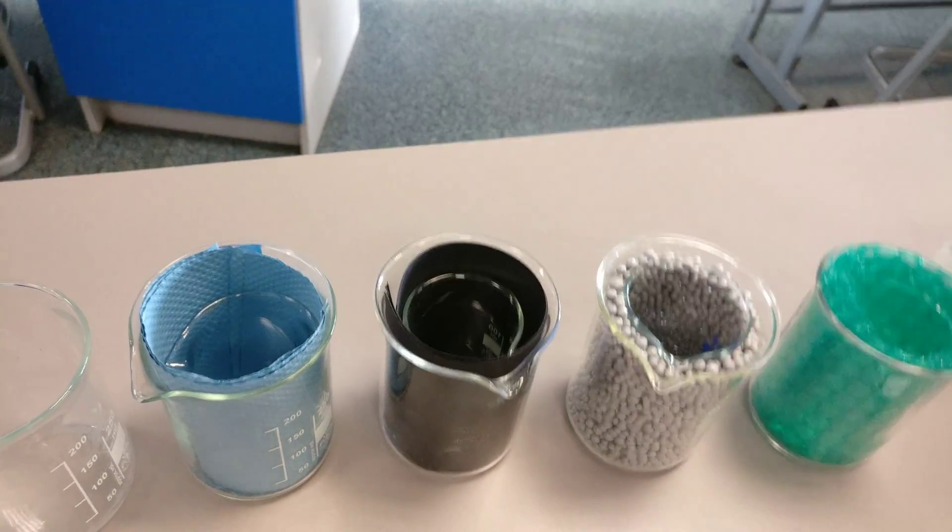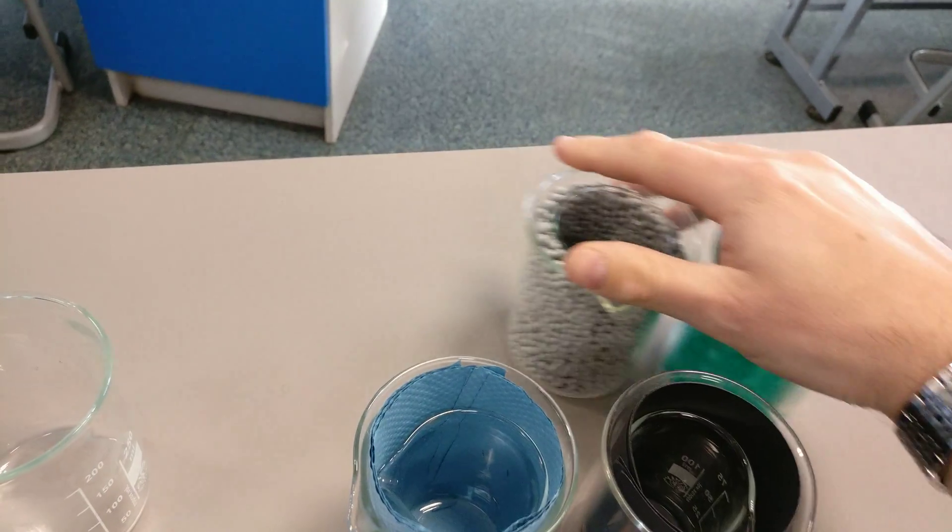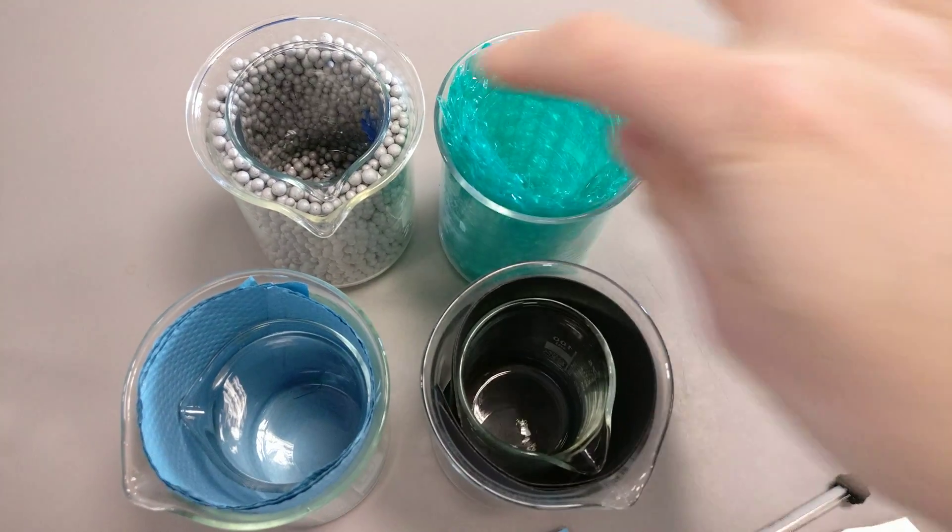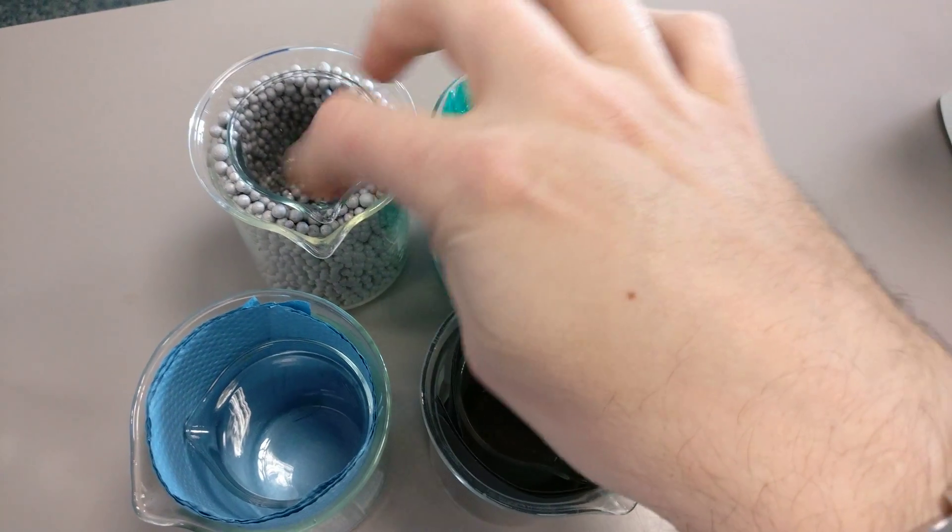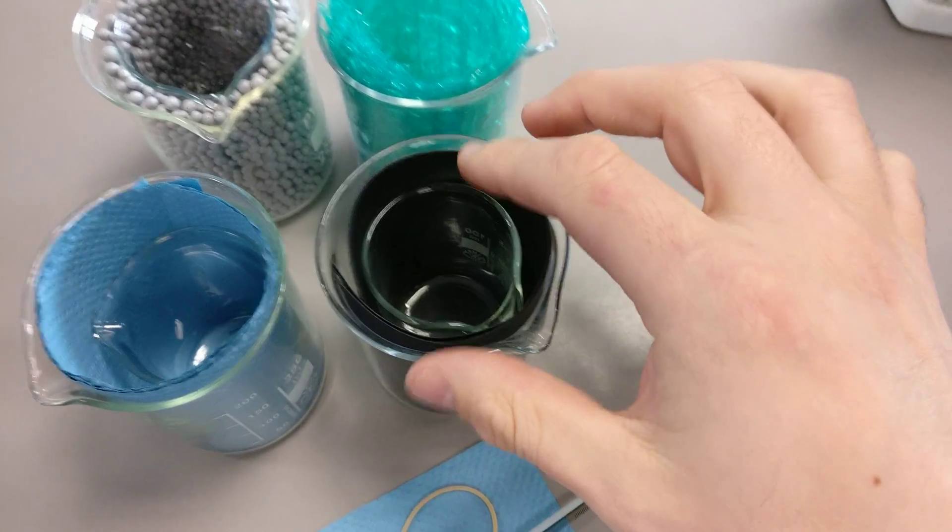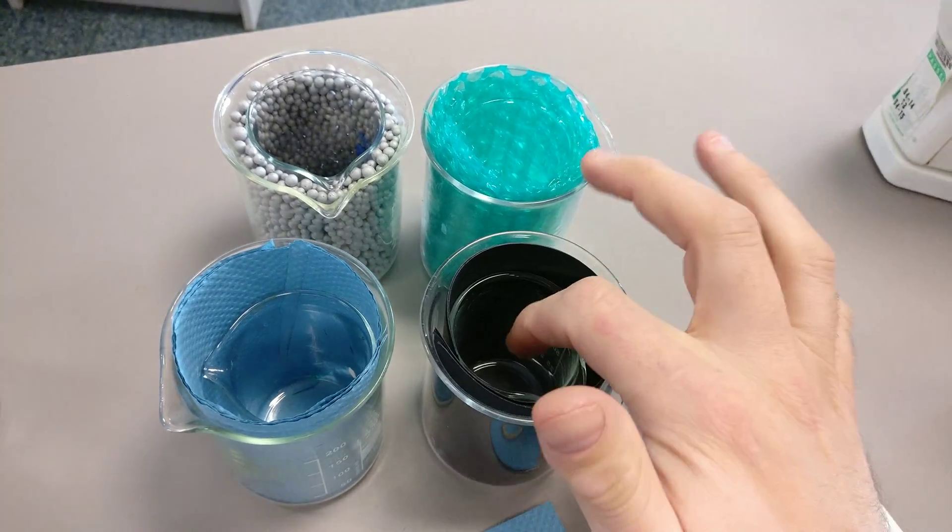So what we're going to look at, well let's move them around a bit so we'll get them all in shot. So we have four lots of insulation. We've got little beads from my cavity wall insulation, some bubble wrap, some black card, and some paper.